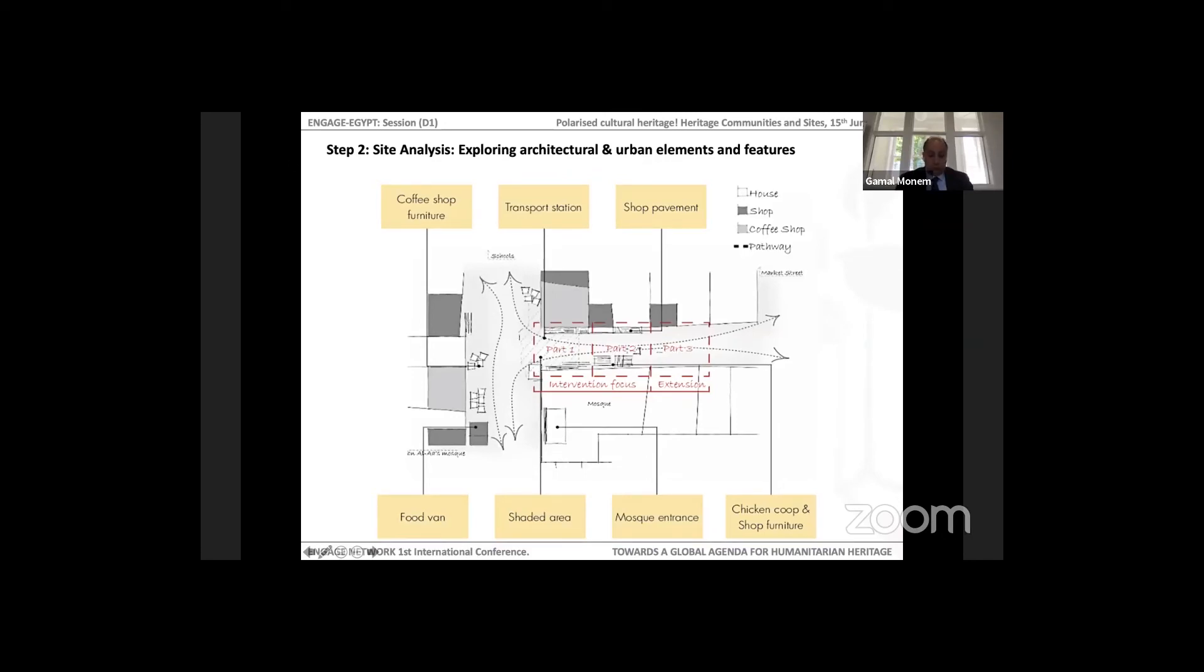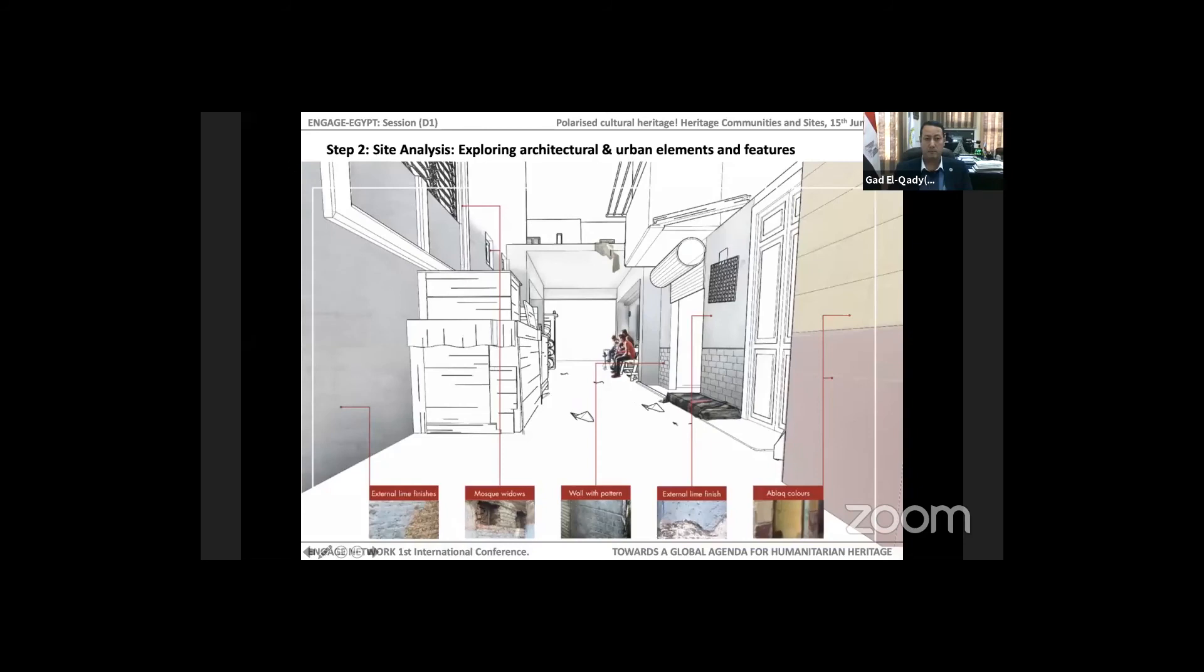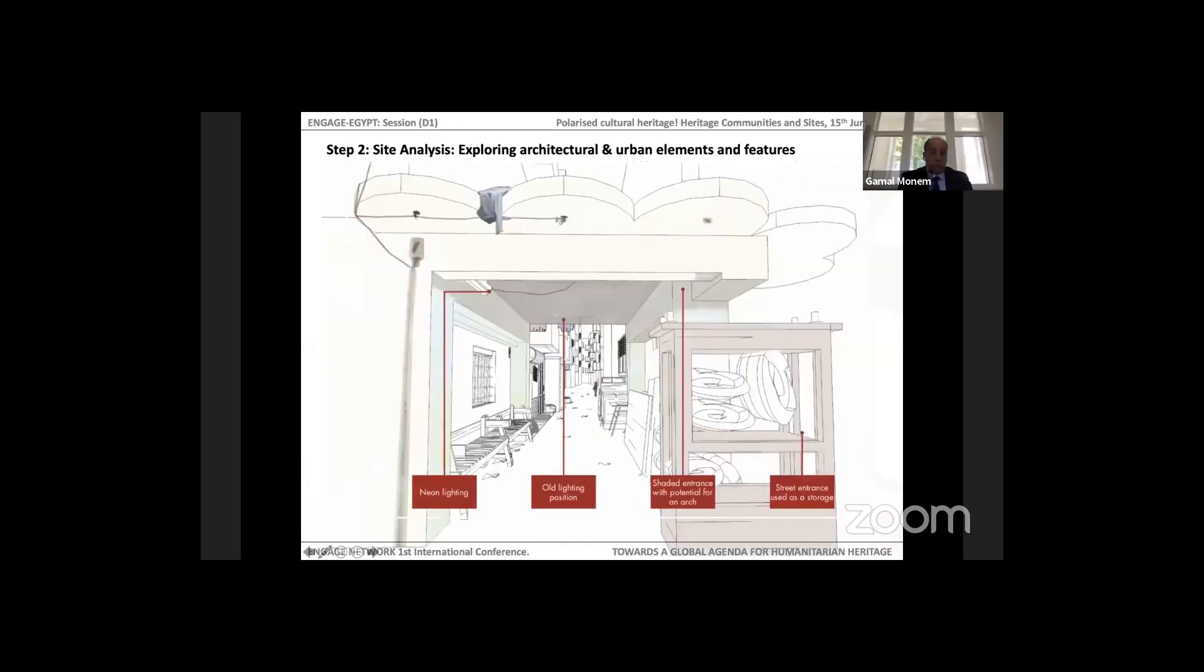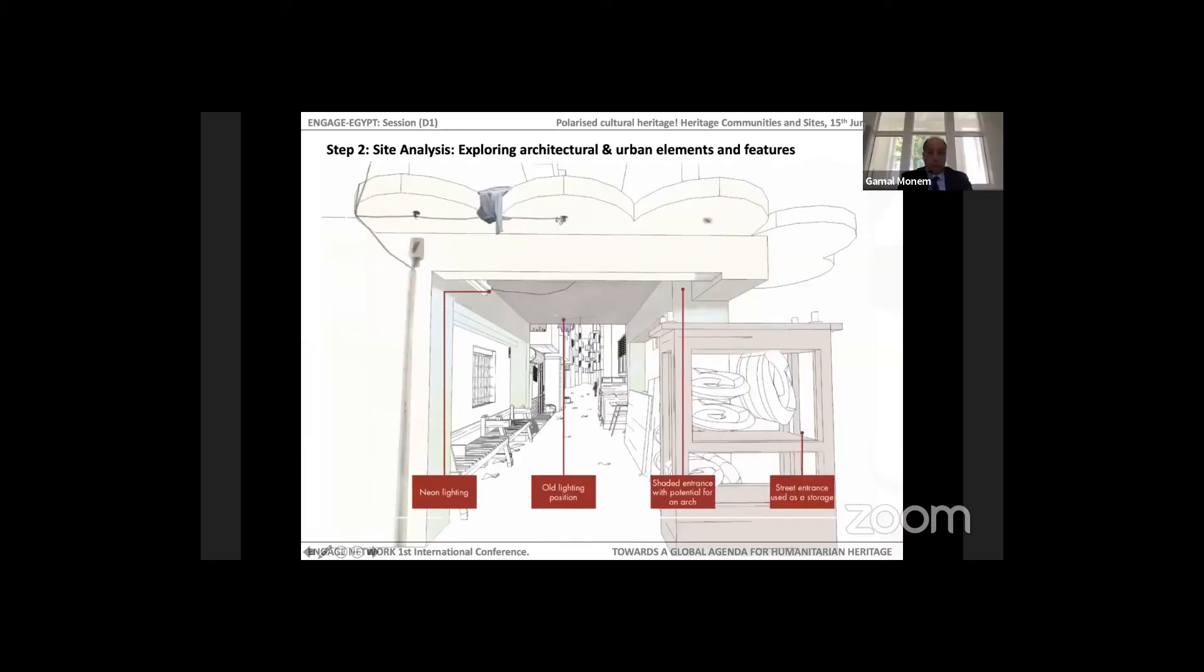The second step included site analysis, exploring the architectural and urban features of the space but also understanding the social context and the use of the space. We defined this step by doing analysis and studying the different street furniture and street elements which we are going to upgrade and work on, studying also the existing architectural vocabulary around the site.